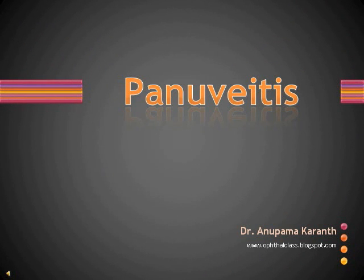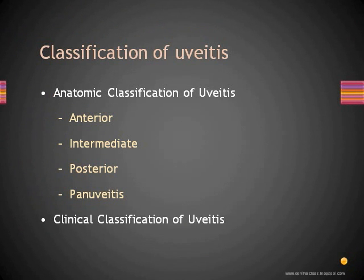In this class we shall deal with pan uveitis. First, a quick recap of what pan uveitis is. Uveitis can be classified anatomically or clinically. In anatomic classification, uveitis can be anterior uveitis, intermediate uveitis, posterior uveitis, or pan uveitis, depending upon which part of the uveal tissue is predominantly involved.